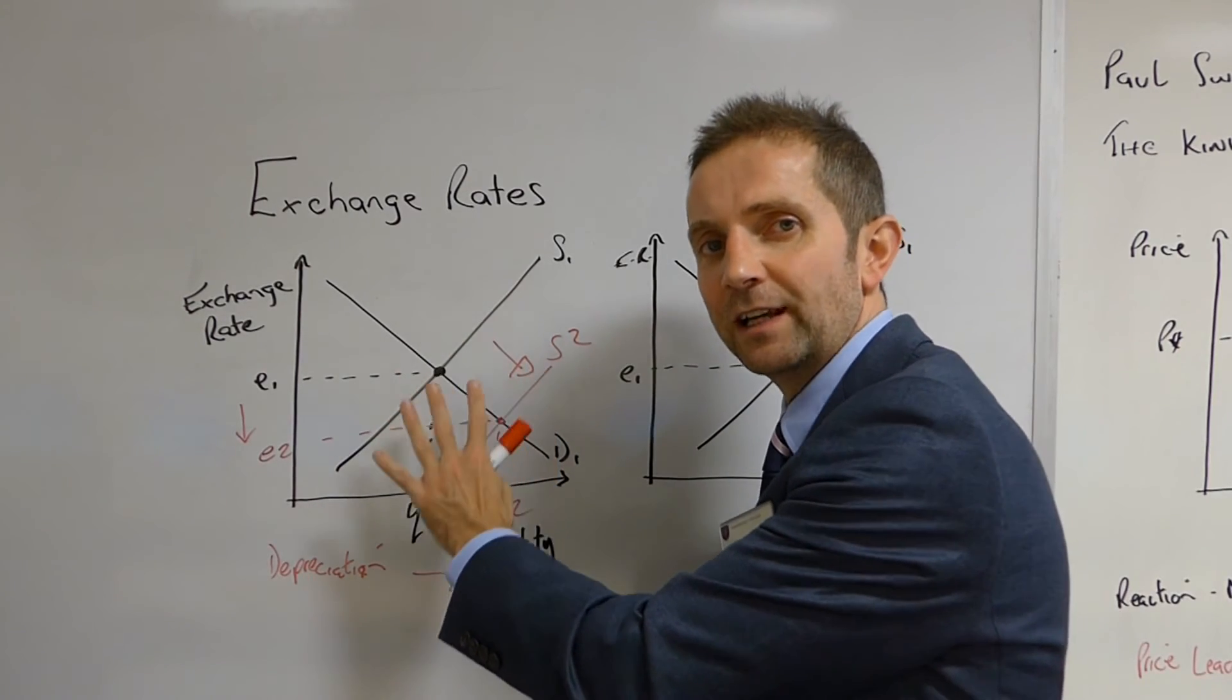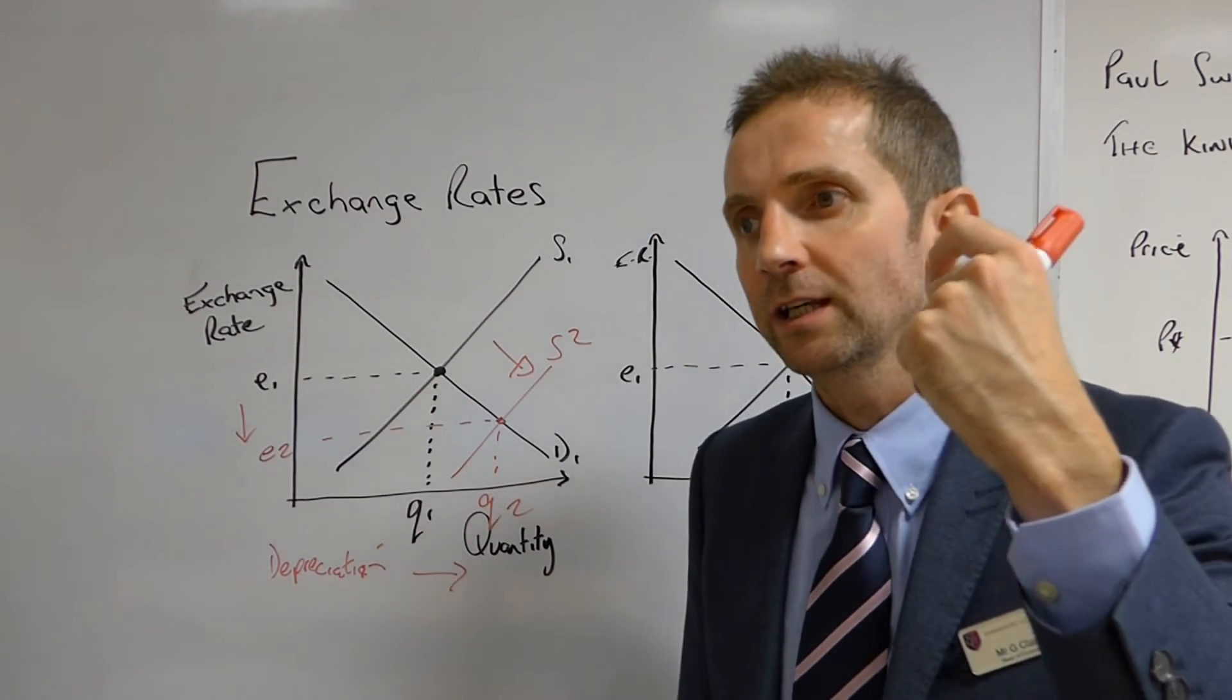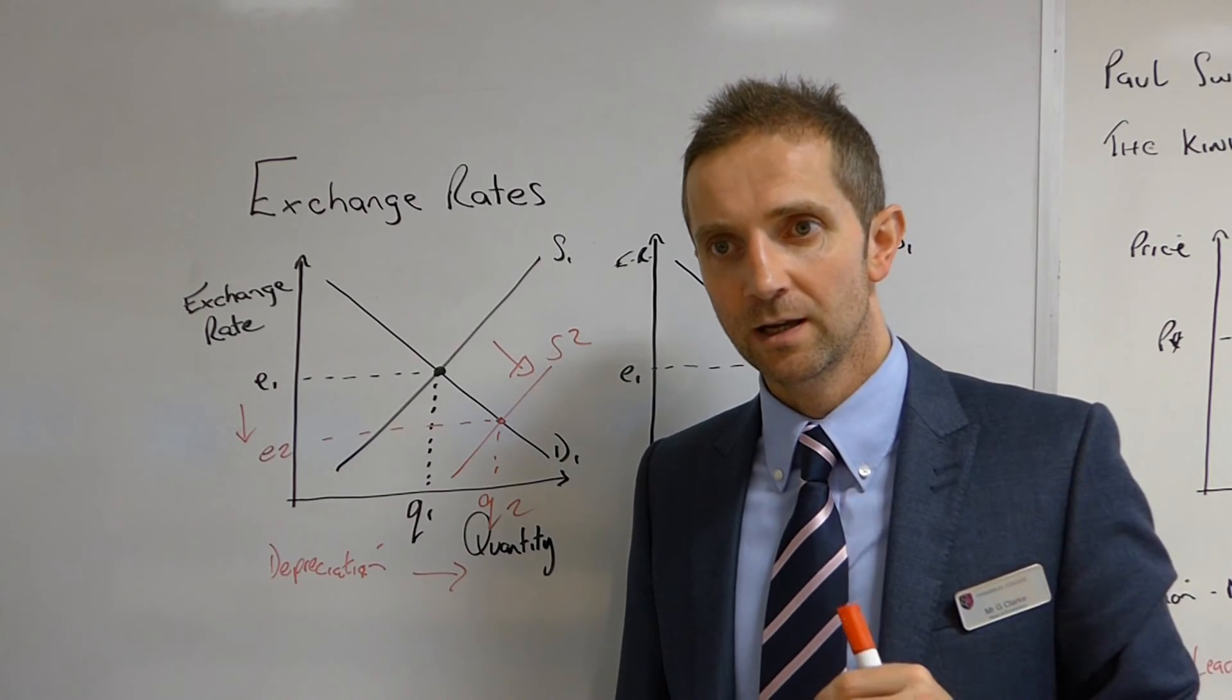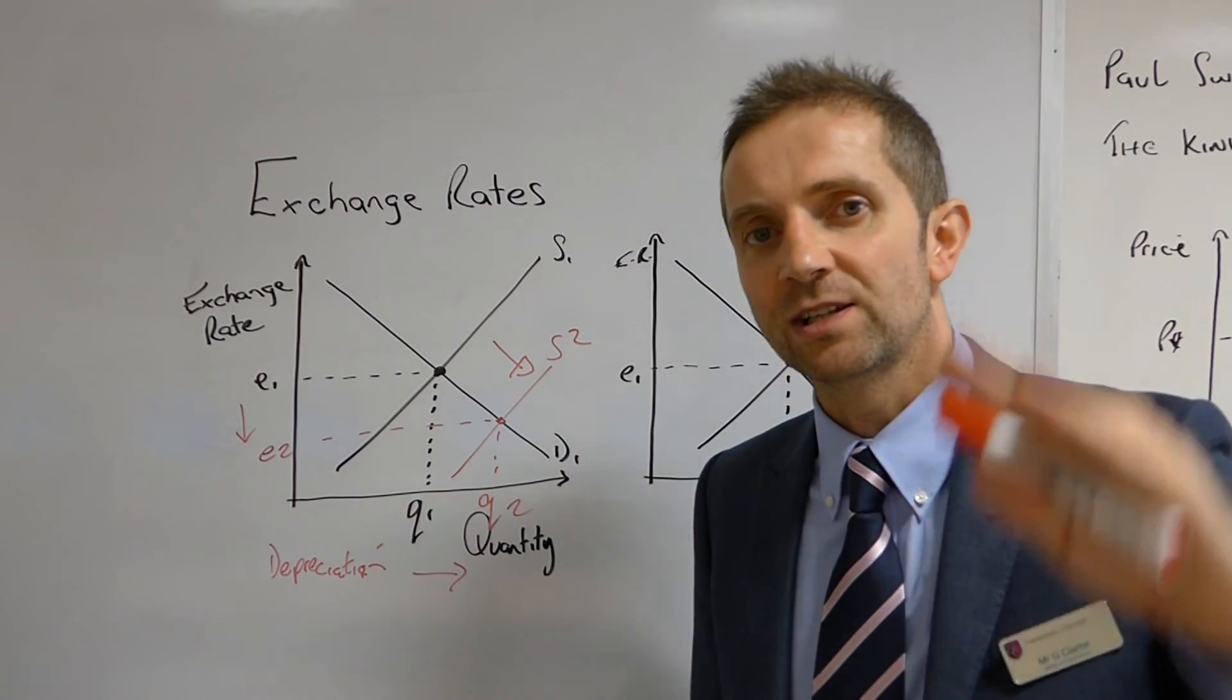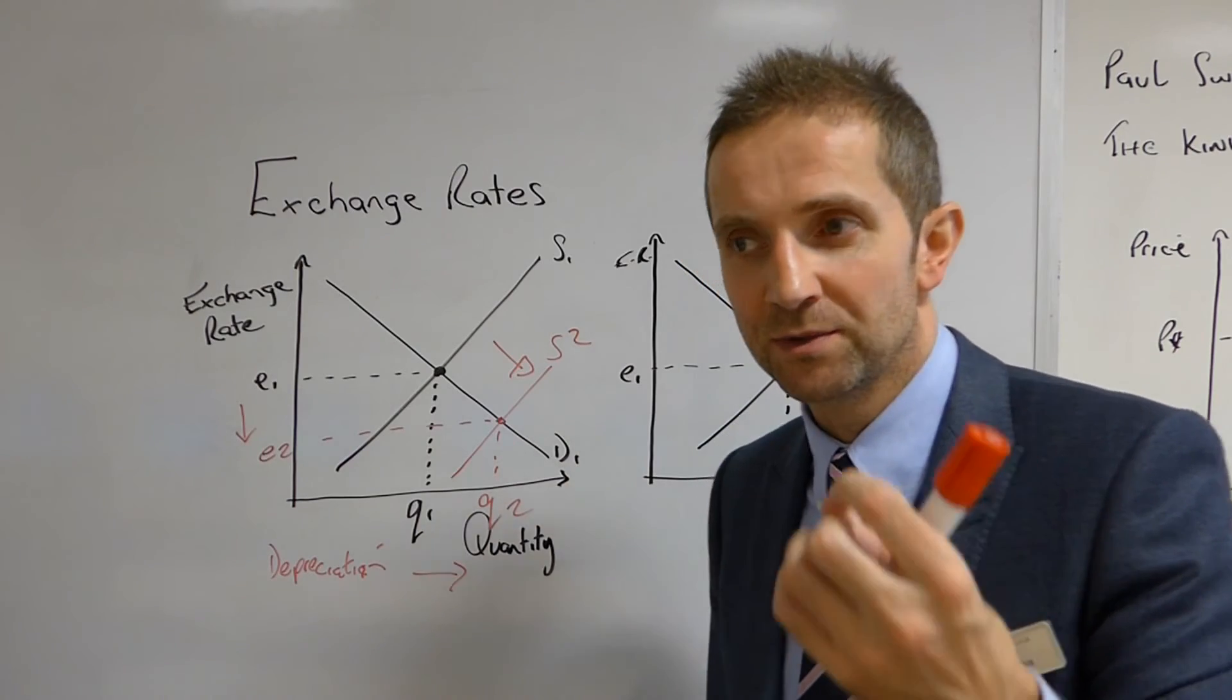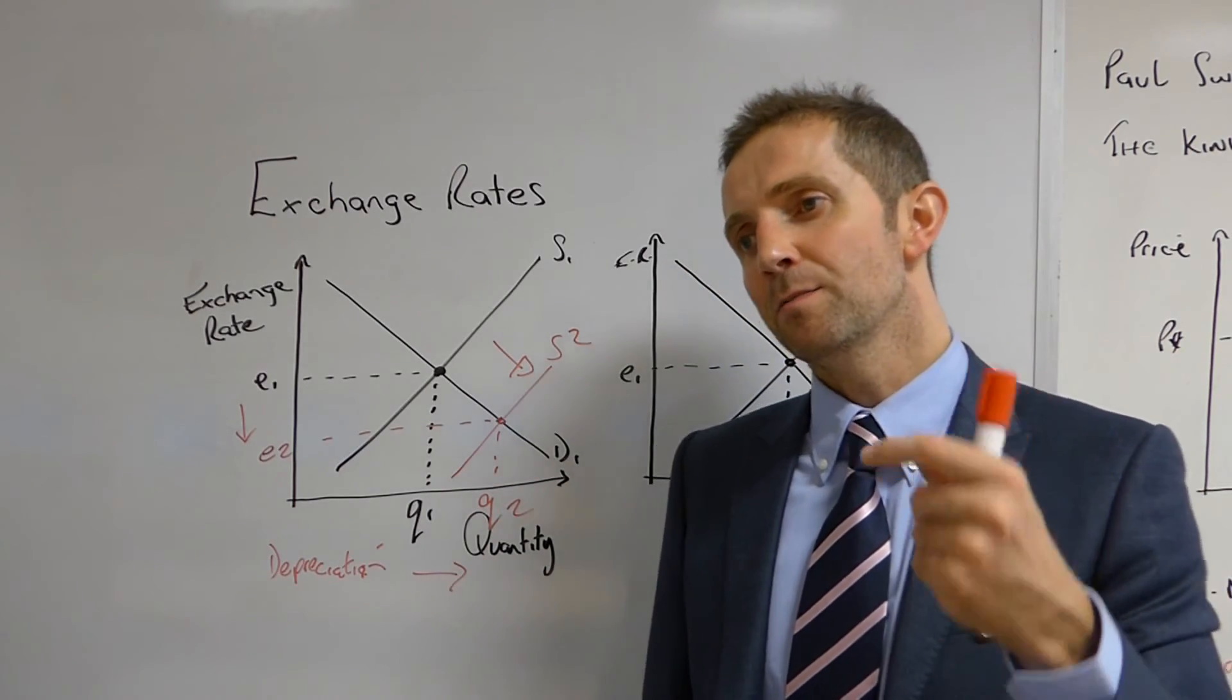But when you don't have this flexible movement, all the adjustment process and all the restoration of competitiveness has to come by what's known as internal devaluation. So that means trade union reform, it means slapping down wages, it means clamping down on price rises, it means structural reform in terms of opening markets to competition and so on.